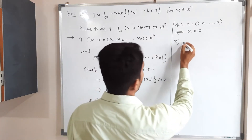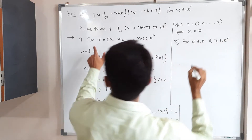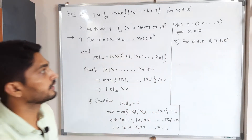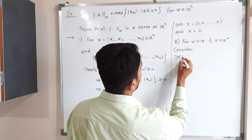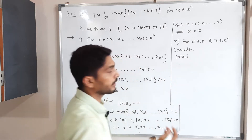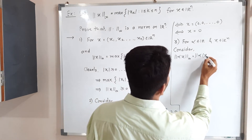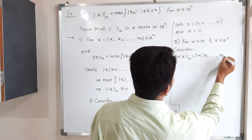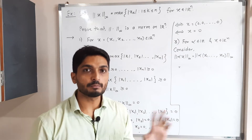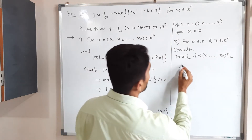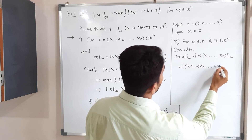For the third property, we need a scalar α ∈ ℝ and x = (x₁, x₂, ..., xₙ) ∈ ℝⁿ. We consider ‖αx‖∞ = ‖(αx₁, αx₂, ..., αxₙ)‖∞, multiplying each component by α.